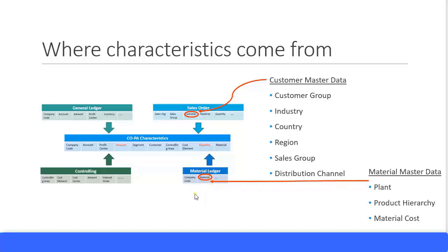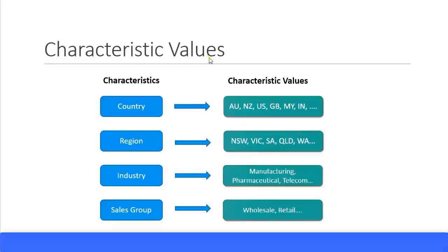Let's look at characteristic values — don't get confused with value fields and characteristic values. Characteristic values means: for example, if your characteristic is Country, then the values inside it could be AU, NZ, US, GB, and so on. For Region, the different regions within your countries will be the characteristic values. Whatever characteristics you have, they will have some values, and those values are what get reported inside your COPA reports.